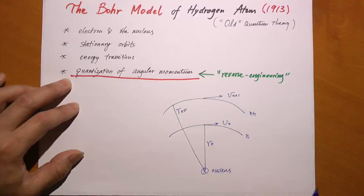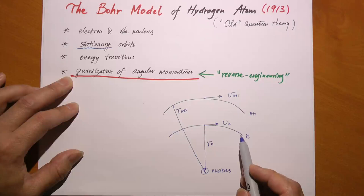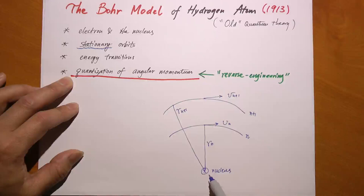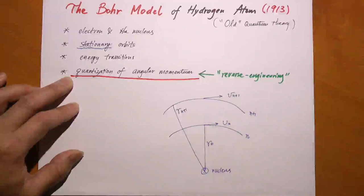Bohr says this contradicts the fact that the atom is actually stable, so he proposes what's called stationary orbits. In other words, as the electron moves in a given circular orbit, it never releases any energy. It does not decay into the center of the atom—it does not crash into the nucleus—because it does not lose any energy. The energy is constant, and therefore the orbital is stable. We call them stationary orbits.